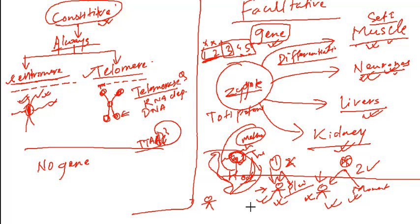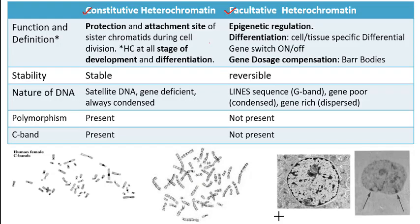This heterochromatin formation leads to epigenetic modification — that is the second function. The third significant function is Barr body formation, which is gene dosage compensation. Looking at the comparison table: the role of constitutive heterochromatin is protection and providing attachment sites for sister chromatids and tubulin. The role of facultative heterochromatin is epigenetic regulation, differentiation, and gene dosage compensation via Barr body formation. Remember: facultative heterochromatin is a gene-containing region, while constitutive heterochromatin has no genes.